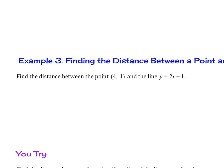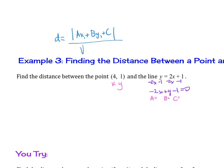Find the distance between the point (4, 1) and the line y equals 2x plus 1. First, set the equation equal to 0 by moving everything to the left side: negative 2x plus y minus 1 equals 0. So a is negative 2, b is 1, and c is negative 1. Then plug into the distance formula: absolute value of (a times x1 plus b times y1 plus c) over the square root of (a squared plus b squared).